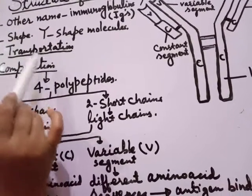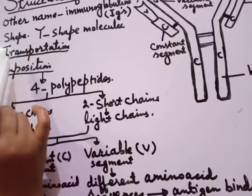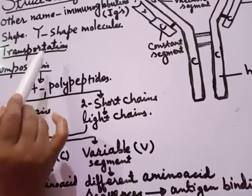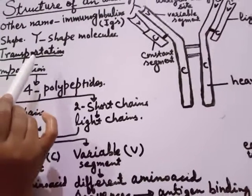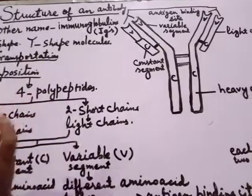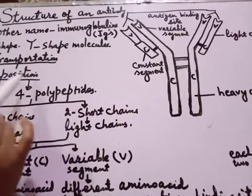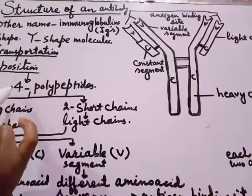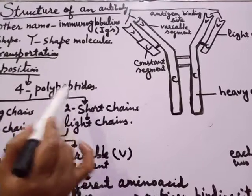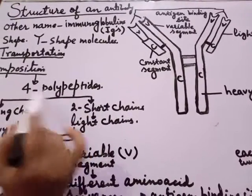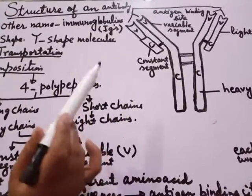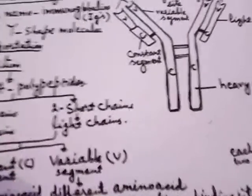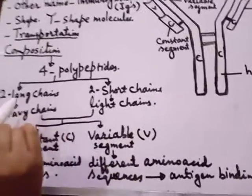The antibodies are transported through the blood and lymph to the pathogen invasion site. Now, what is their composition or structure? Each antibody molecule consists of four polypeptide chains. Two chains are long chains.